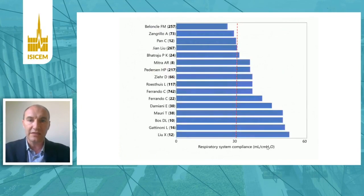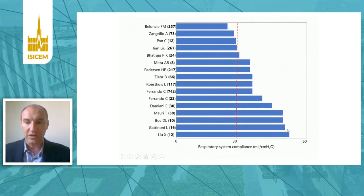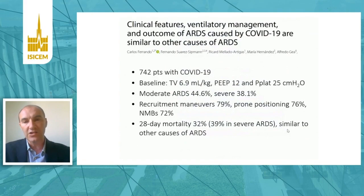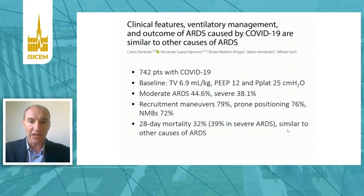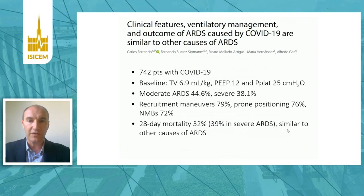Looking at all the case series published so far, values of respiratory system compliance vary widely from study to study — from very low values around 20 ml/cmH₂O to very high values around 60 ml/cmH₂O. A large Spanish case series of more than 700 COVID-19 ICU patients showed that ventilator settings, use of rescue treatments for refractory hypoxemia, and mortality are basically the same as in other causes of ARDS.